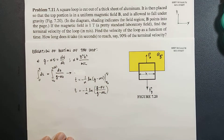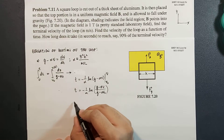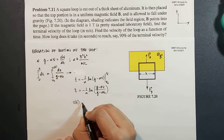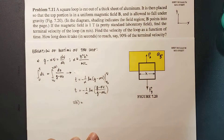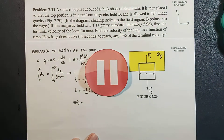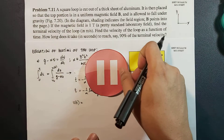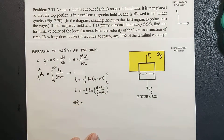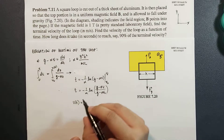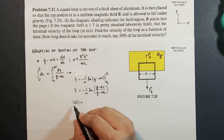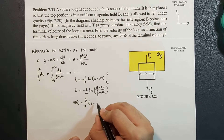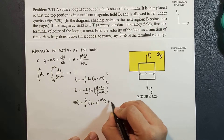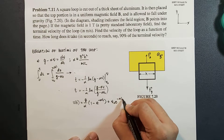We can do some algebraic manipulation here to express the velocity as a function of time — you can pause the video to try it yourself. Once you do the algebraic manipulation, you should end up with this expression: v as a function of time equals g over alpha times (1 minus e to the negative alpha t) plus v0 times e to the negative alpha t.